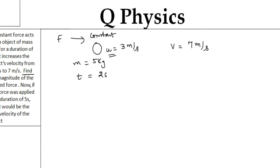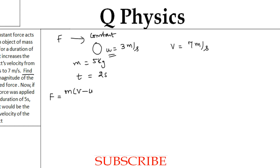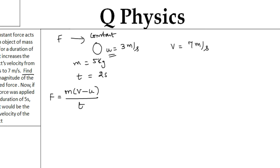Let us start from Newton's second law. We know that force is defined as the rate of change of momentum. So F equals M into (V minus U) by T, which means M×V minus M×U — that represents the change in momentum — divided by time T.